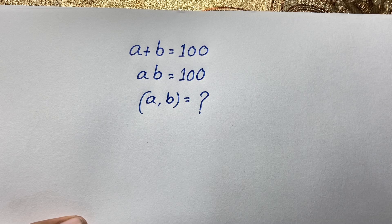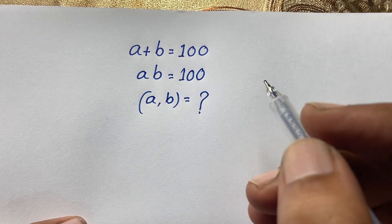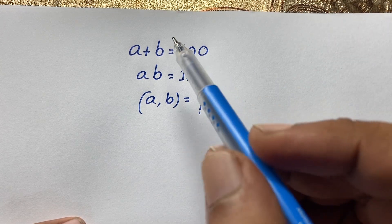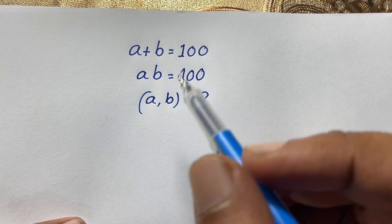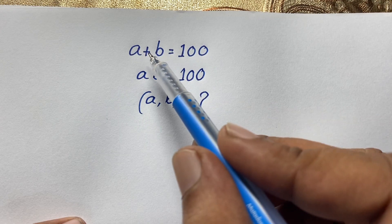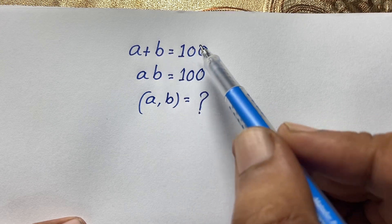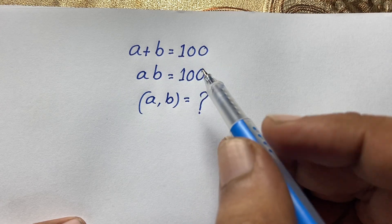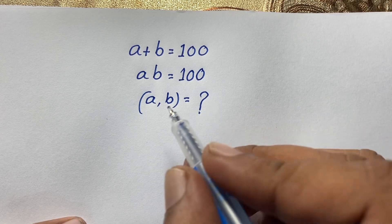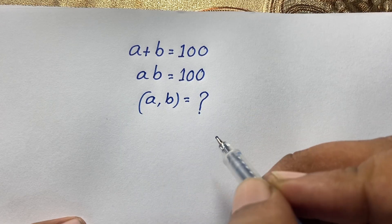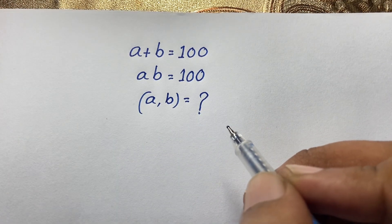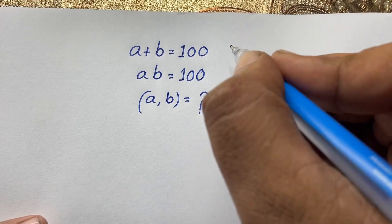Hello everyone. In this video we have solved a nice Japanese Math Olympiad question: a plus b is equal to 100, and a times b is equal to 100. How to solve this interesting math problem?